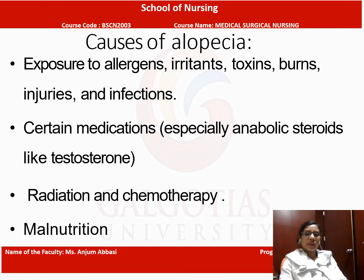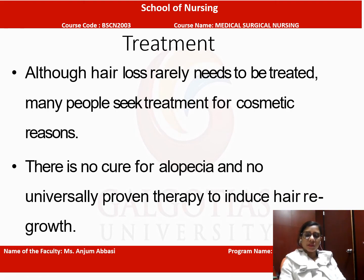The causes of alopecia include exposure to allergens, irritants, toxins, burn injury, and infection. Certain medications like testosterone, radiation, and chemotherapy can also cause alopecia, as can malnutrition.